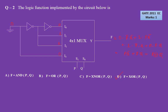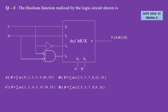You will notice this pattern in several other questions — the 0, 1, 1, 0 input pattern generates an XOR gate output. You can keep that in mind. Moving on to the next question, which was asked for 2 marks in GATE 2010. Again we have to find out the function.